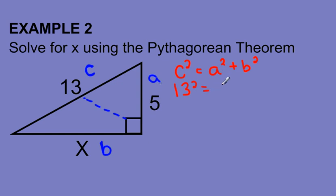Well, I know c is 13. And I know a is 5. And b is our x. That's our unknown. We're not sure what that side is.